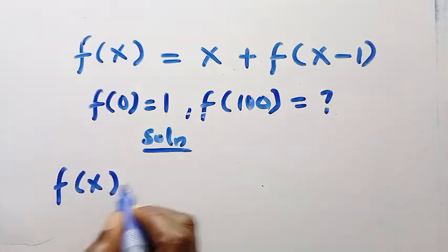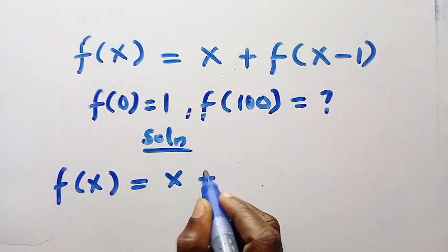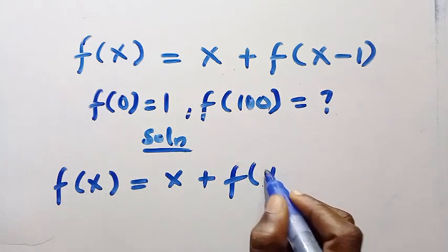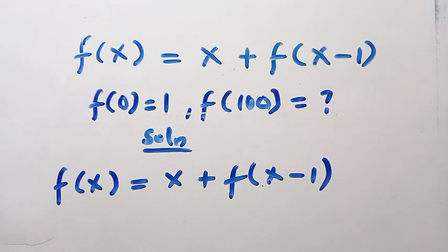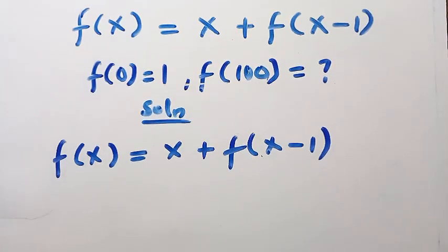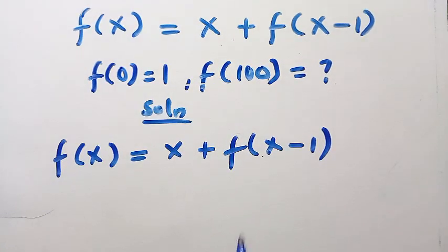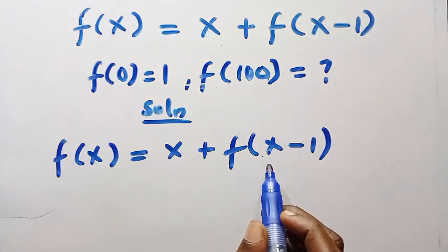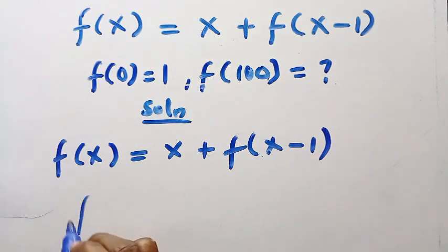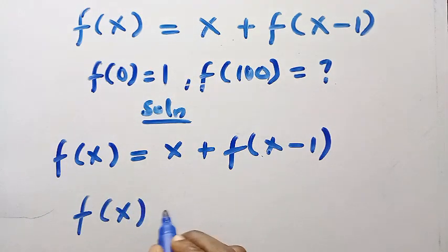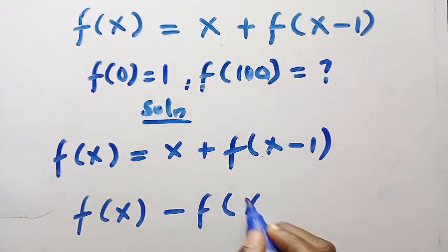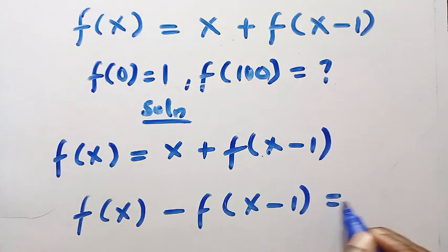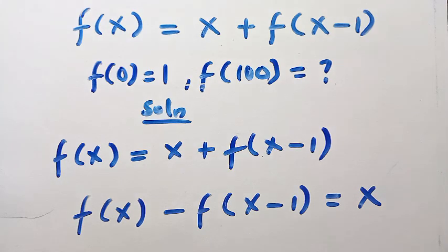So we have f(x) = x + f(x-1). This is the given question. The first thing we are going to do is let's take f(x-1) to this side, so that we have f(x) - f(x-1) = x. So this now becomes the formula we are going to be applying.